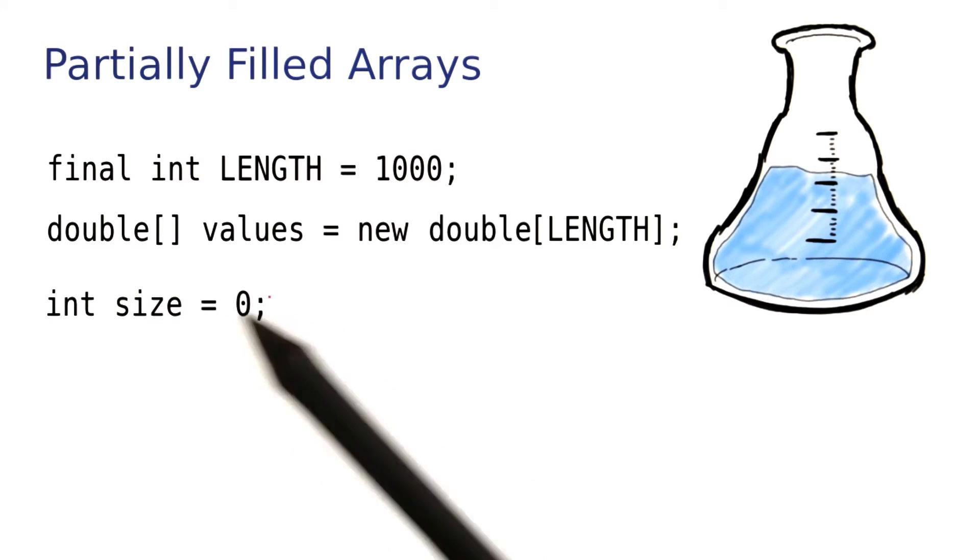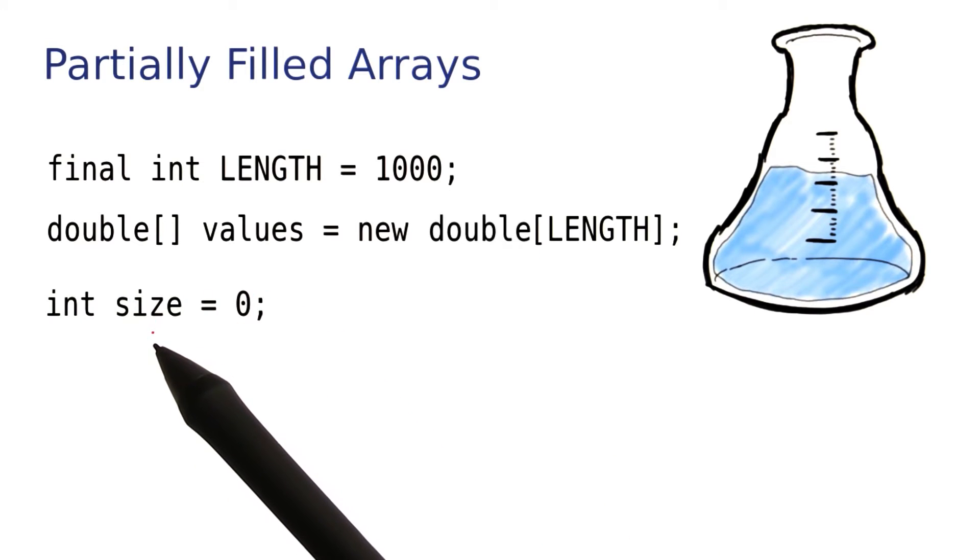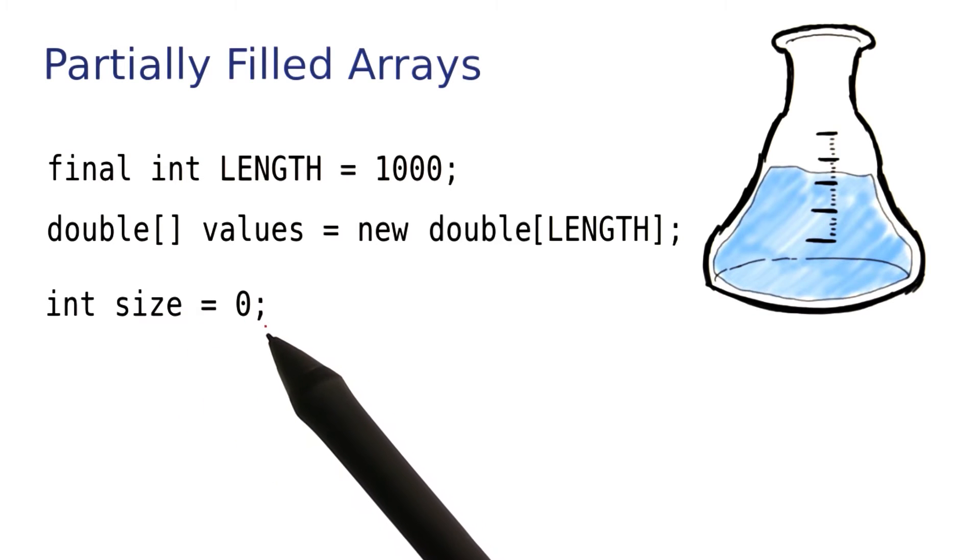And then I keep a companion variable that I call the size that tells me how many elements I currently have. Right now I don't have any.